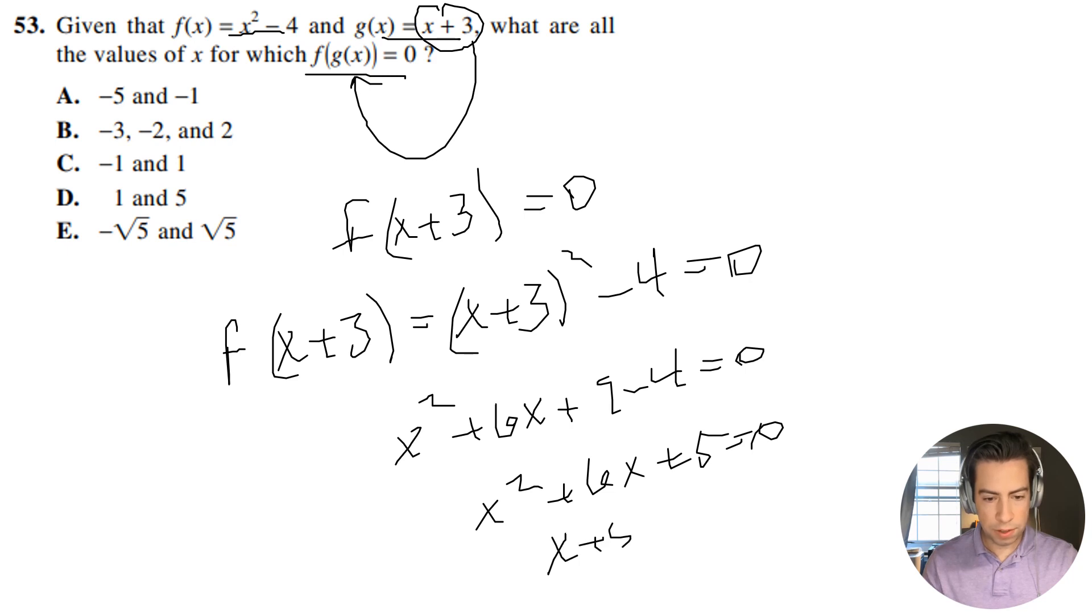So then I'm going to factor this out. I'm going to get x plus 5 and x plus 1, and therefore x equals negative 5 and negative 1.